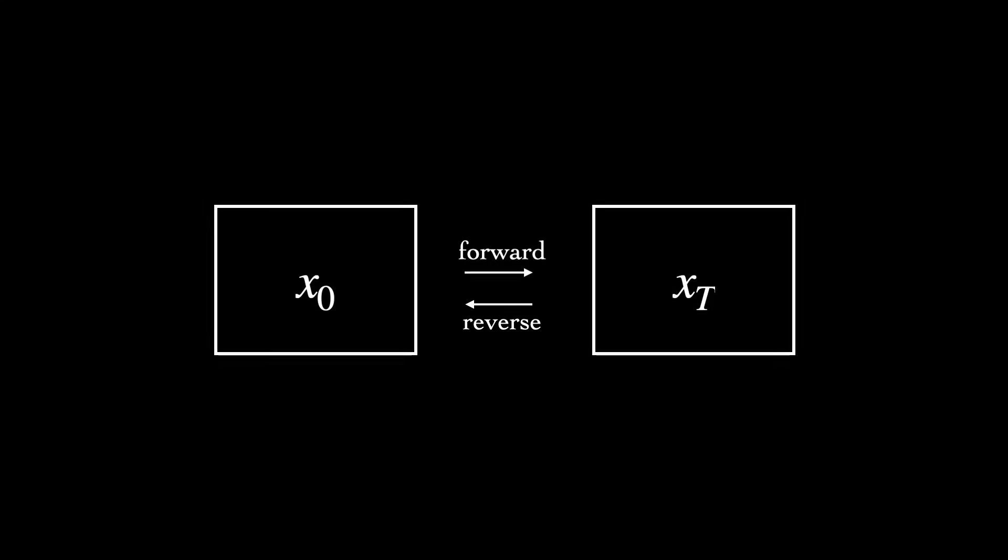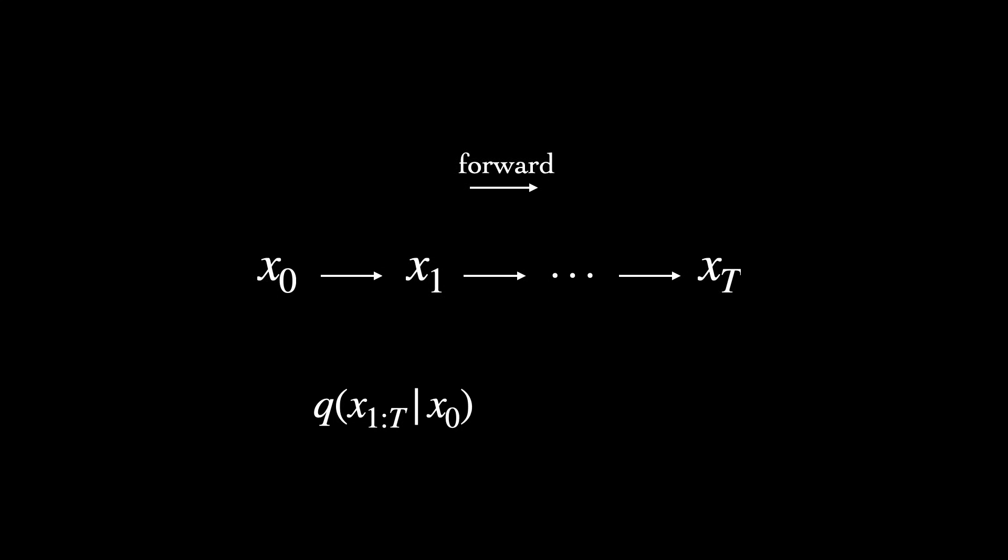The forward process, which we'll denote with Q, takes the form of a Markov chain, where the distribution at a particular time step only depends on the sample from the immediately previous step, so we can write out the distribution of corrupted samples conditioned on the initial data point, x0, as the product of successive single-step conditionals.